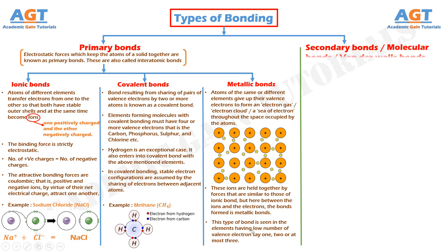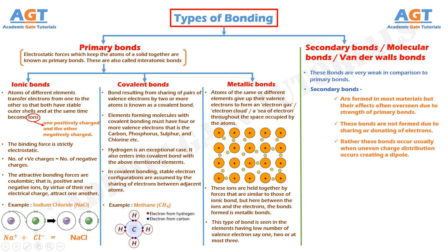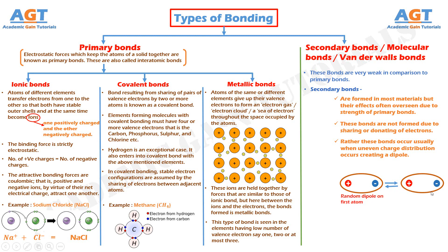Secondary bonds are also known as molecular bonds or van der Waals bonds. These bonds are very weak in comparison to primary bonds. Secondary bonds are formed in most materials but their effects are often overshadowed due to the strength of primary bonds. These bonds are not formed due to sharing or donating of electrons. Rather, these bonds occur when uneven charge distribution occurs, creating a dipole. Secondary bonds are formed due to polarization of electric charge in atoms which are very close to each other. Polarization in an atom is a separation of the centers of positive and negative charge due to the attraction of outer electron orbits in the atom to the positive nucleus of an adjacent atom. These bonds are formed for those elements or compounds whose electronic configuration is such that there is little transfer of electrons between their atoms. Once a random dipole is formed on the first atom, an induced dipole is also formed on the neighboring atom, and the force acting between them is the van der Waals force.